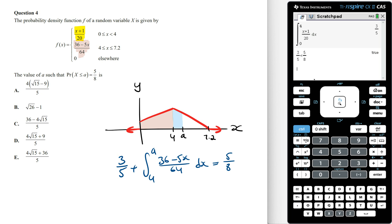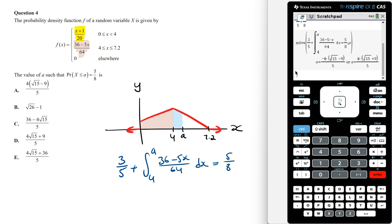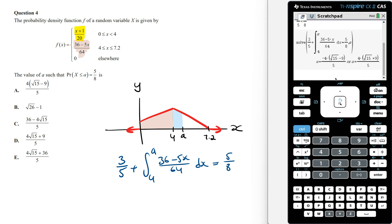Setting this up in the calculator we can solve for the value of a. Solving for a we get two values. Looking at the decimal values a is equal to 4.1 or a is equal to 10.3. We know that the value of a has to be between 4 and 7.2 and so it has to be the first one.